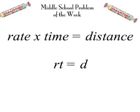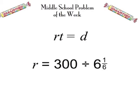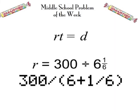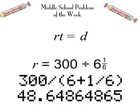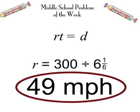Then we visit one of our favorite formulas: rate times time equals distance. We know the time and the distance, and we substitute them in. We're missing the rate, so we use the inverse operation: 300 divided by six and one-sixth gives us the average rate. Using our calculator — which doesn't do mixed numbers very well, but there's a workaround shown here — we get an answer that rounds to 49 miles per hour, the answer to this week's problem of the week.